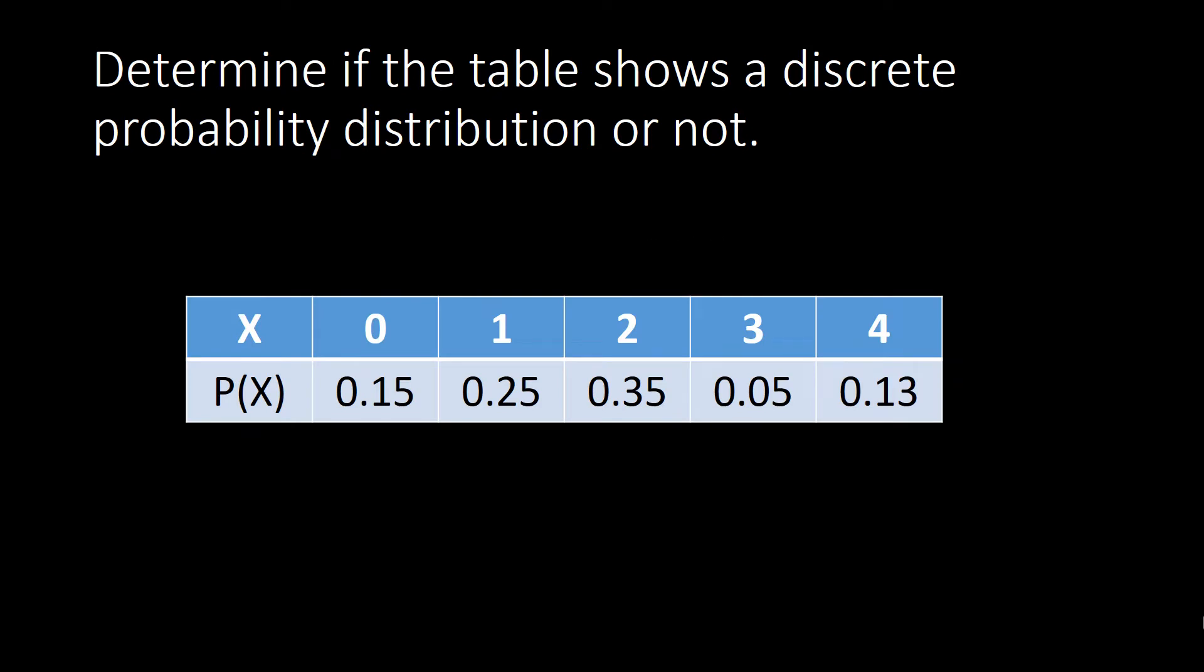Let's start with our first example. Now how would we know if this is a discrete probability distribution or not? First thing is you have to examine each of your probability if it does satisfy our first property.